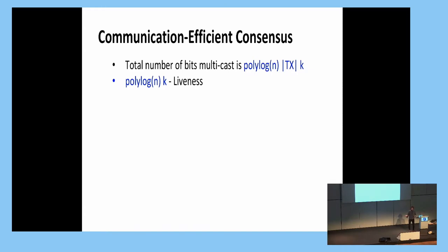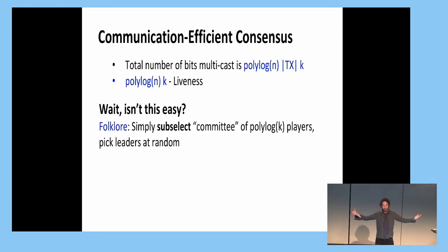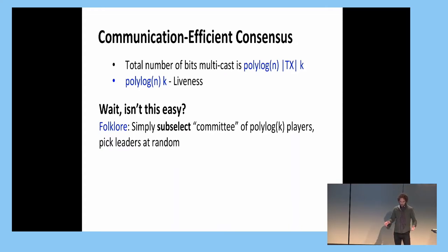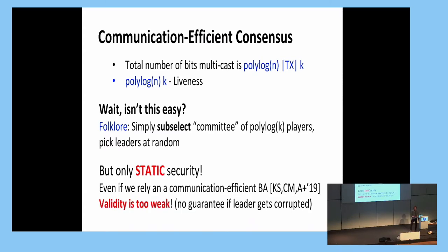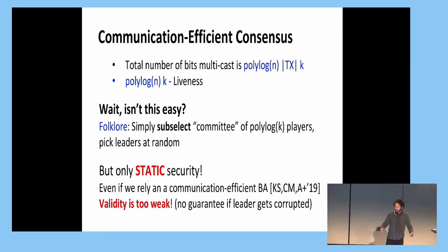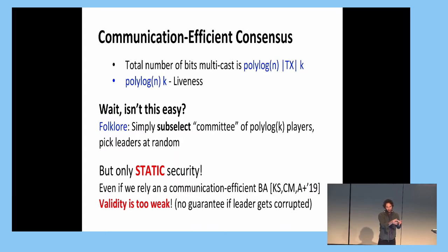There is a trivial folklore approach: if we have a protocol that handles a large number of players, why not subselect a small group and run it among those? We have simple methods of subselecting a committee of players to run this. But this approach of subselection only gives you a protocol with static security. If an adversary can adaptively corrupt nodes, they can just corrupt exactly who gets elected to the committee — corrupting a small fraction — and control everything.